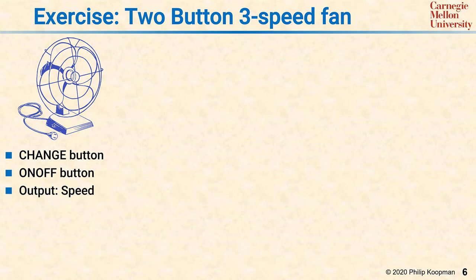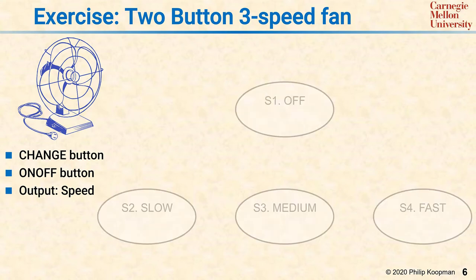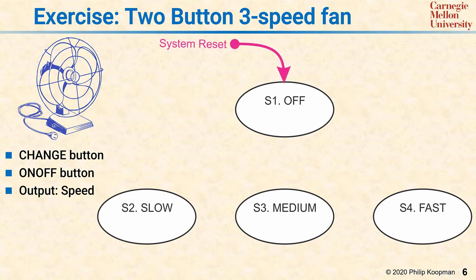At the beginning, the procedure is the same. We define four states because the fan has four different states it can be in: off, slow, medium, fast. We toss in a system reset, and we identify the side effects. So far, no different from the simple fan. But now we have two buttons to work with.